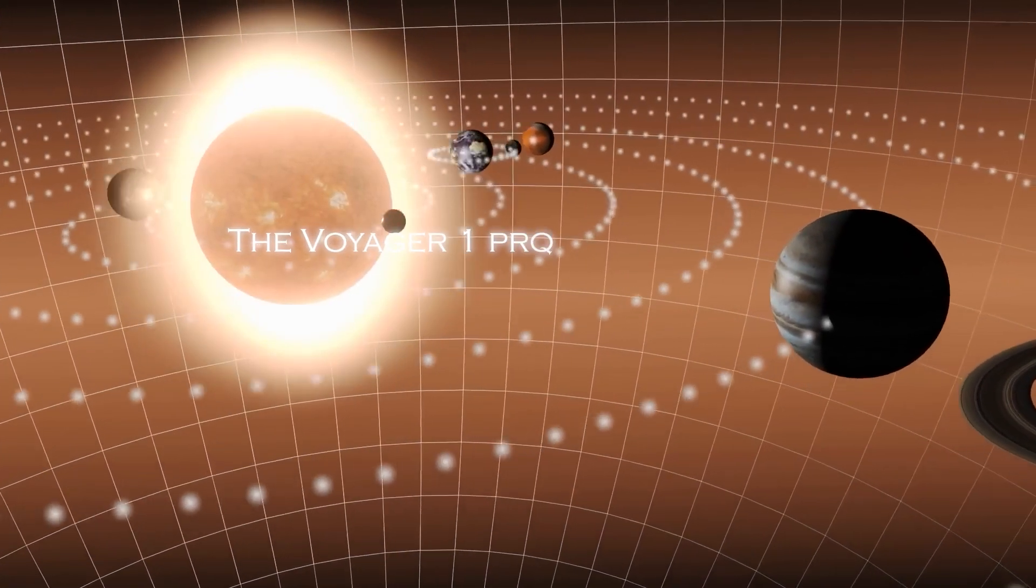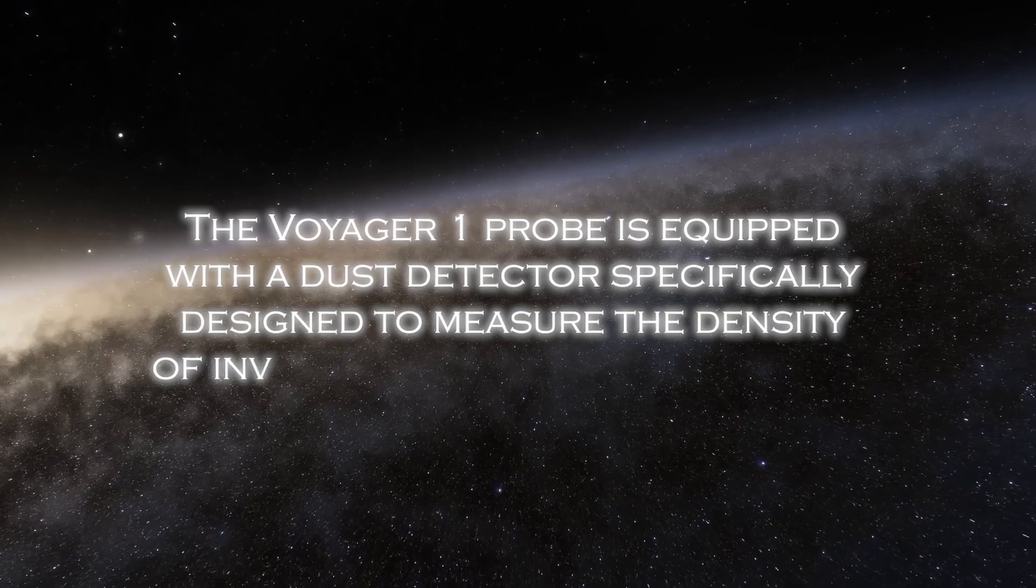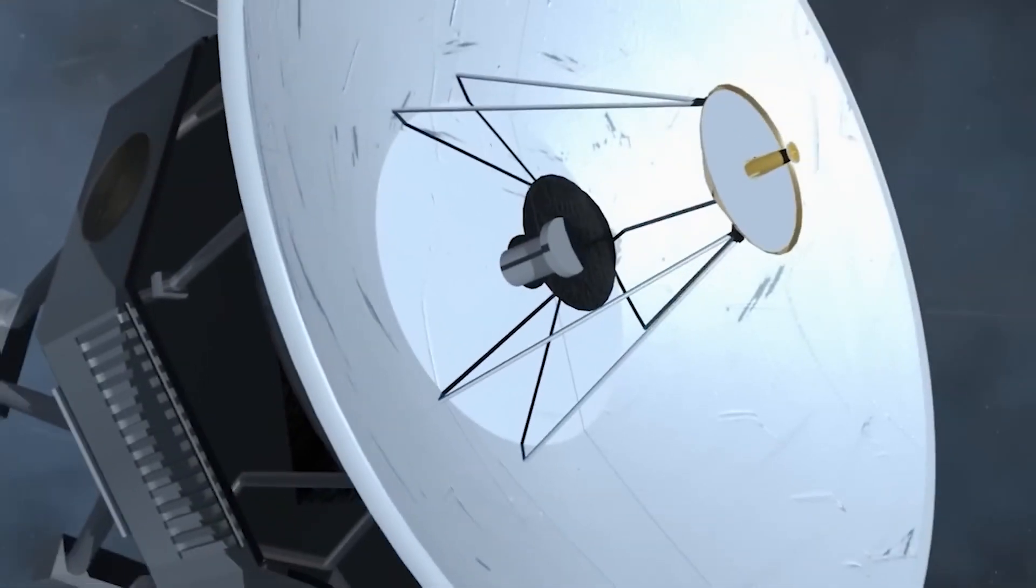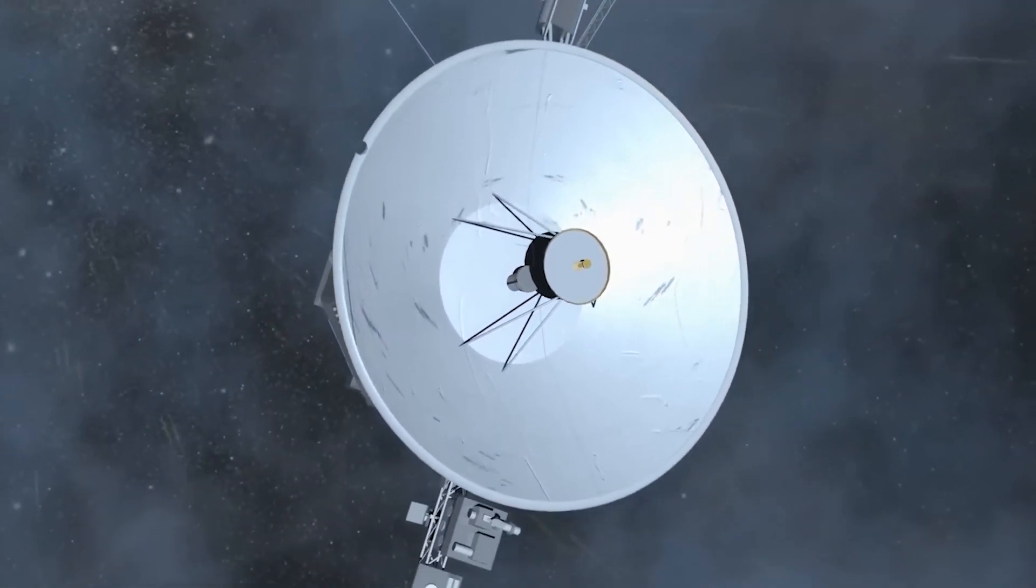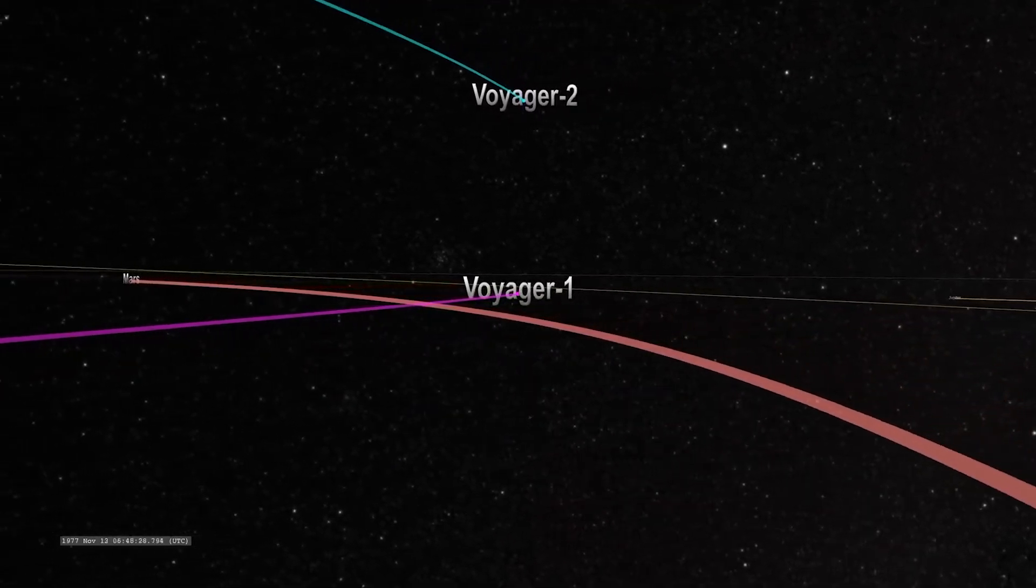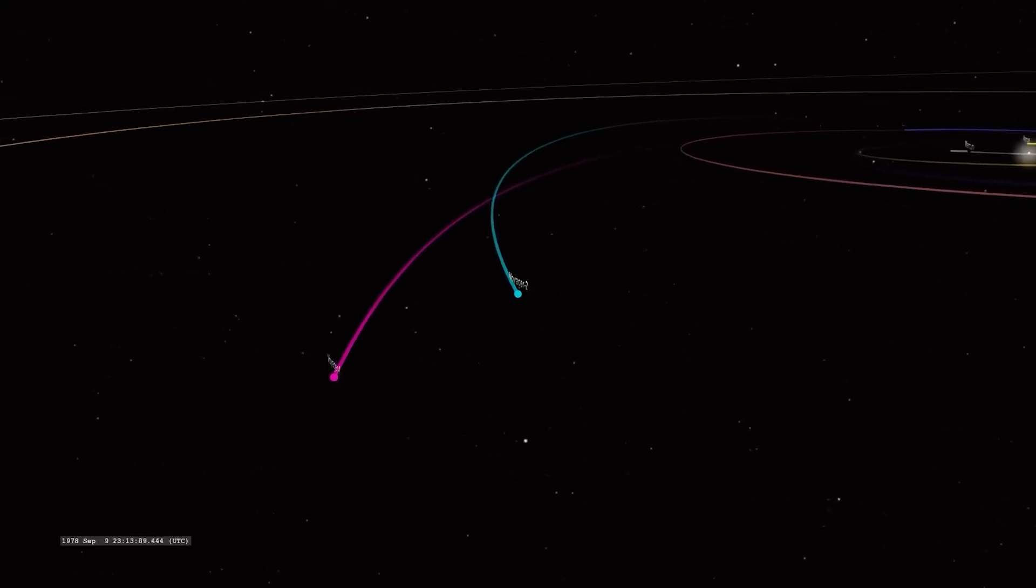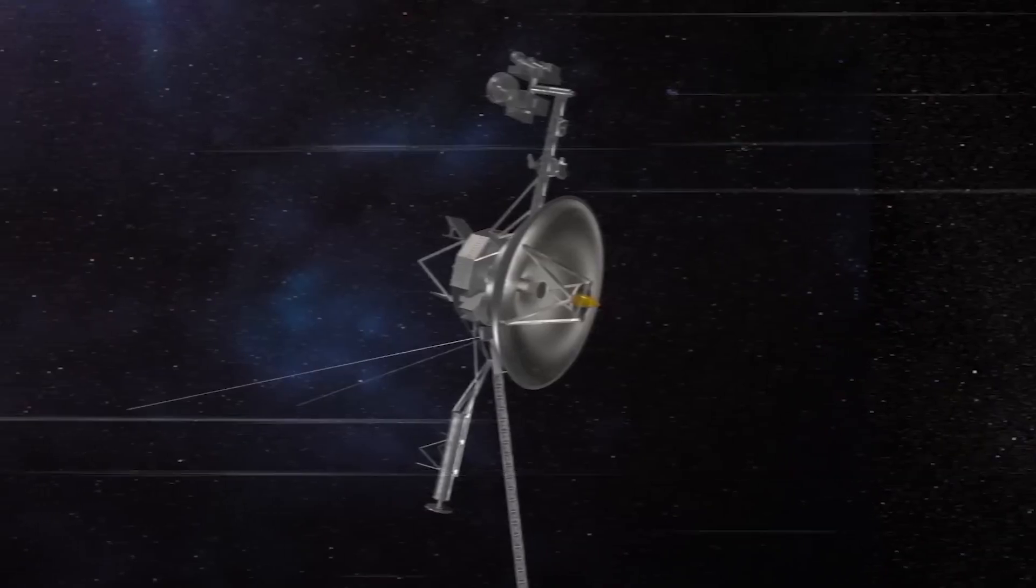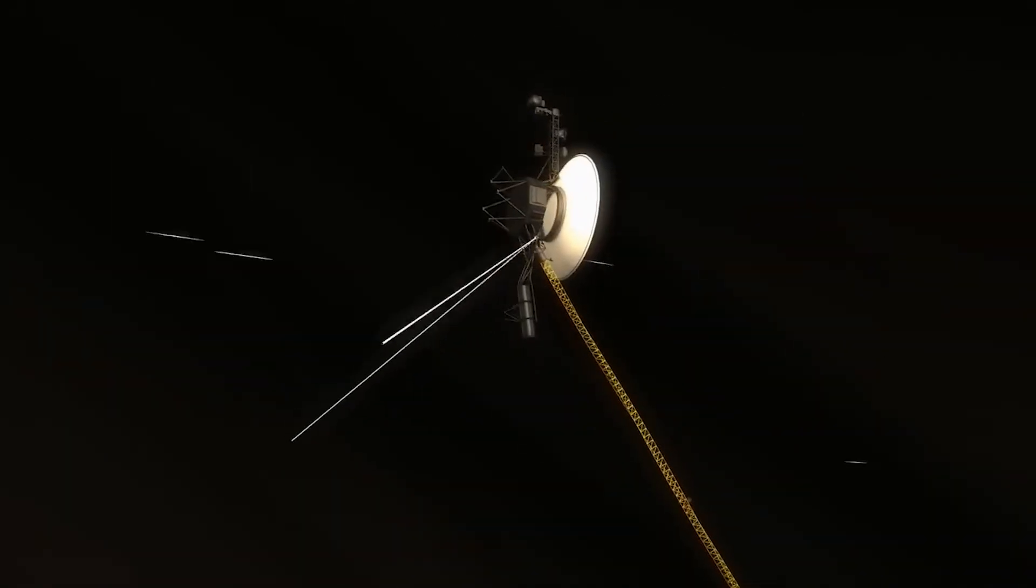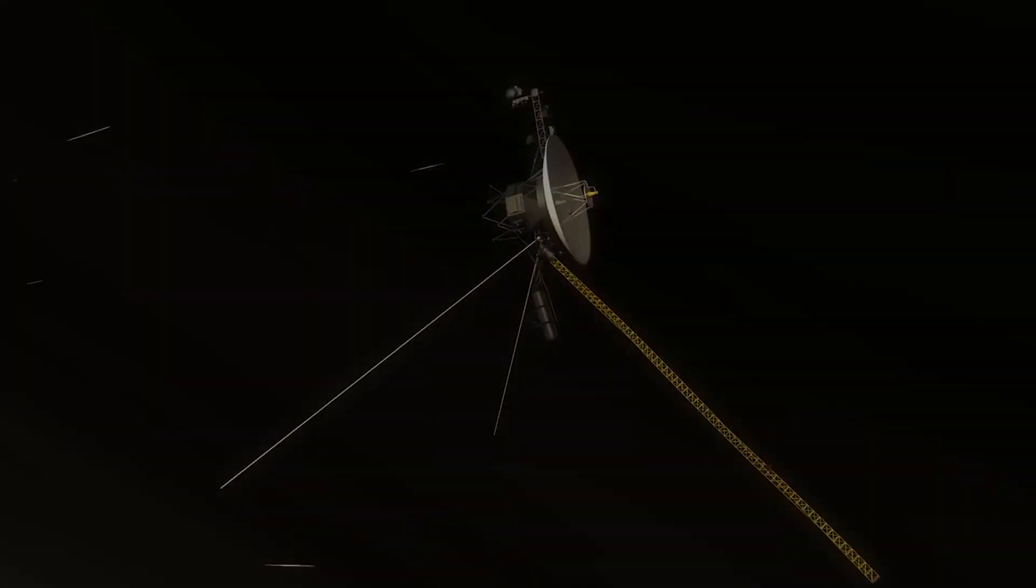The Voyager 1 probe is equipped with dust detectors, specifically designed to measure the density of interstellar dust in deep space. However, communication with Voyager 1 has become more difficult due to the limited resources NASA's global antenna system has to receive the mission signals. This has resulted in less frequent communication opportunities. Despite this, a fascinating discovery recently emerged in the data stream.